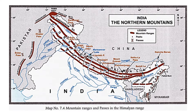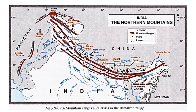Let us now learn about the northern mountains. Here in the map, you can see the brown colours which indicate the mountains. The high mountain ranges run along the northern boundary of the country. There are several ranges we are going to speak about. These lofty mountains are coloured brown, which indicates that they are very, very high.